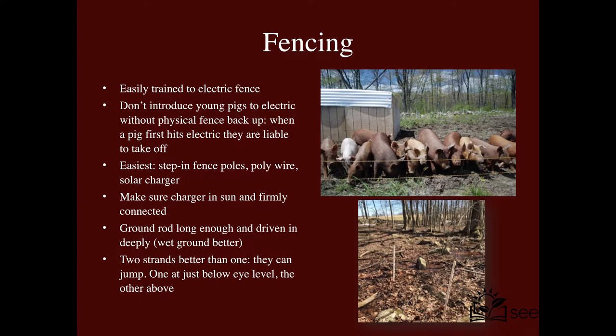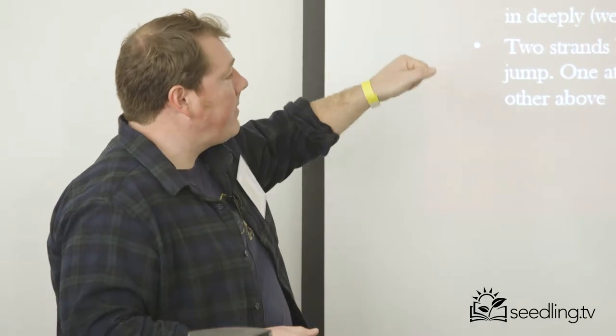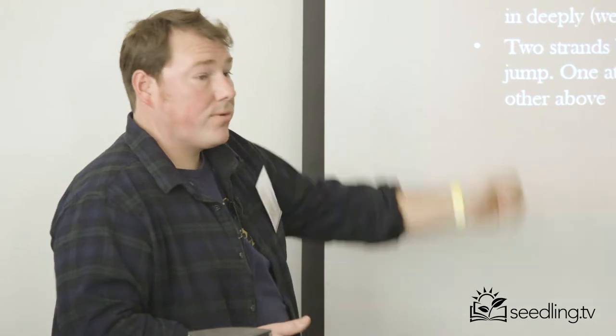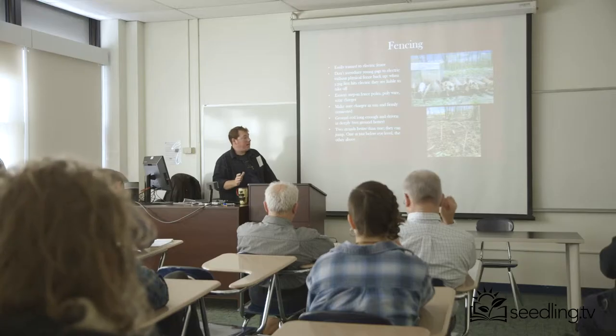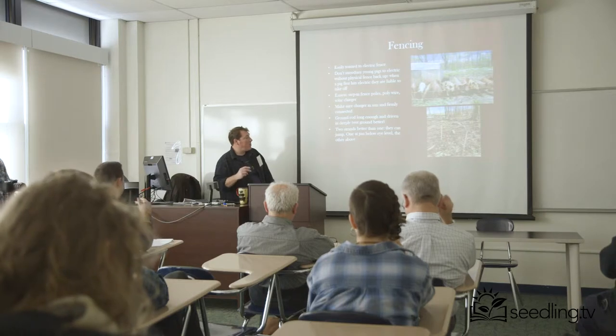Make sure your charger is in the sun and firmly connected. Obviously, if you're keeping them anywhere near outbuildings and have electricity, a plug-in charger is an even better idea because it carries a better charge and has less worry attached to it. But if you have them out in the woods, a solar-powered charger of almost any voltage amperage will do, so long as you have a ground rod that's long enough, at least six feet long, and driven in as far as you can get it to go. And if you can pick an area with wetter ground, the better. That'll make your charge that much stronger.